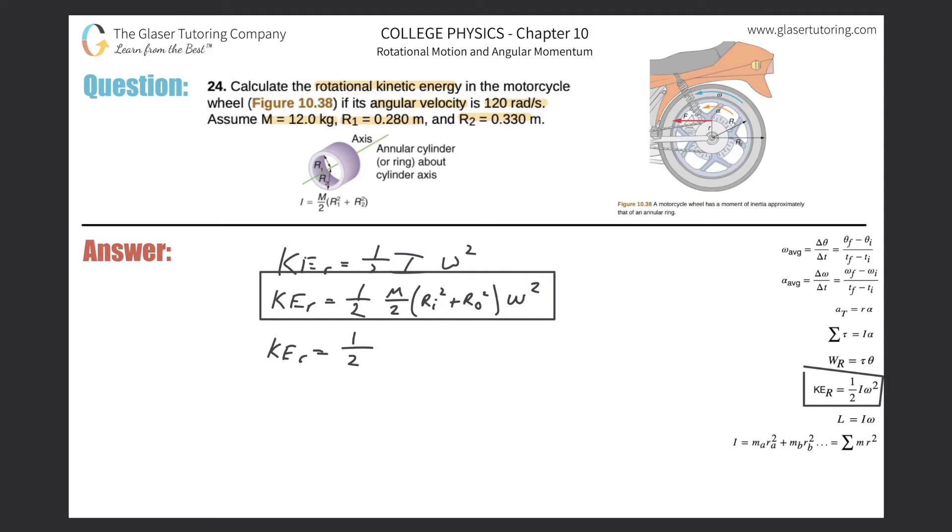So this is just one half multiplied then by the mass, 12 kilograms over two, multiplied by the inner squared 0.28 squared plus then 0.33 squared times the 120 angular velocity squared. So just plug it on into the calculator.